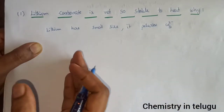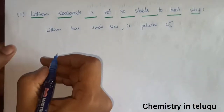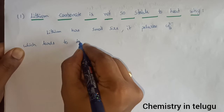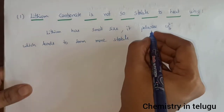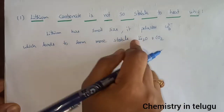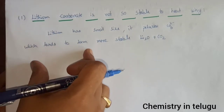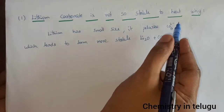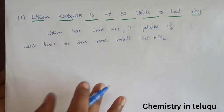The carbonate ion is easy to polarize — lithium ion polarizes it, which leads to the formation of more stable lithium oxide and carbon dioxide. Lithium oxide and carbon dioxide are formed. Lithium is small in size compared to other alkali metals in group 1, so it is easy to polarize the carbonate ion and form more stable lithium oxide and carbon dioxide.